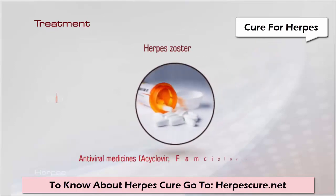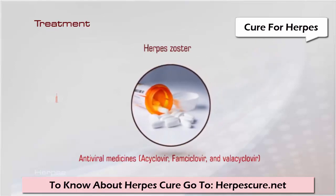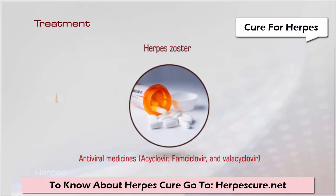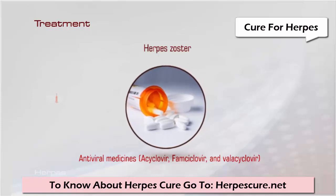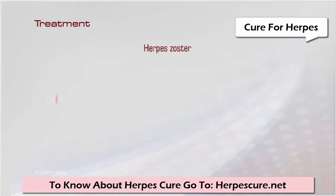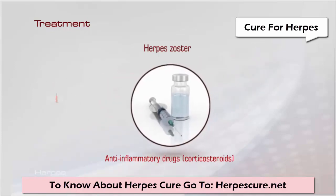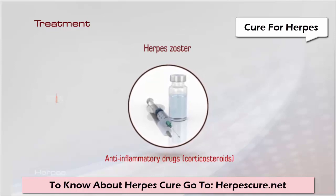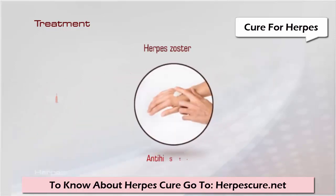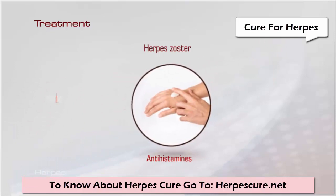Herpes zoster treatment: Antiviral medications such as aciclovir, famciclovir, and valaciclovir are used to reduce pain. Anti-inflammatory drugs such as corticosteroids are given to reduce swelling. Antihistamines can be taken by mouth, or skin creams can be applied to the rash to reduce itching.